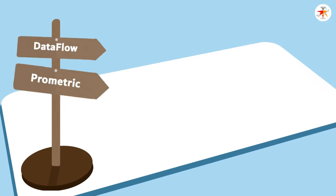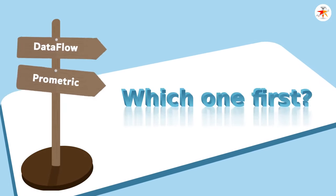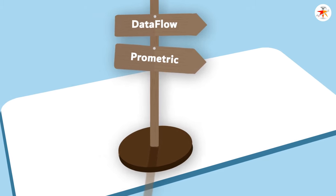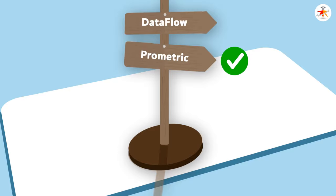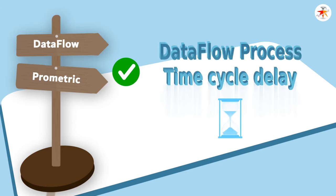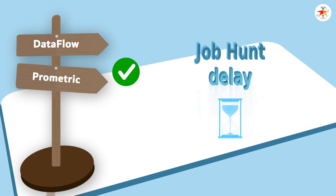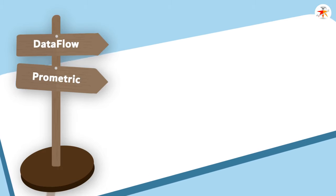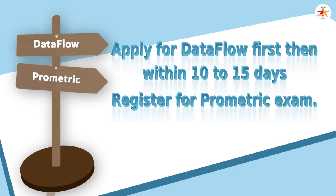Although some may argue that one should start the data flow process only after successfully clearing the DHA Prometric exam — because it may save the data flow fee in case one does not pass — doing so may cause issues. When you pass the exam and then opt for data flow, the major issue is the time this process takes, further delaying your job hunt and ultimately delaying issuance of your eligibility letter. Therefore, it is advisable to apply for data flow before appearing in the DHA Prometric exam.